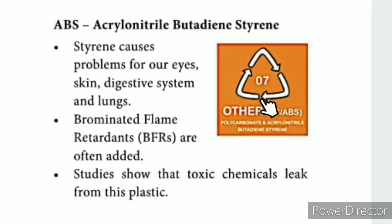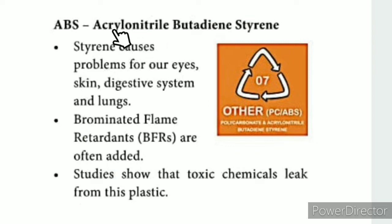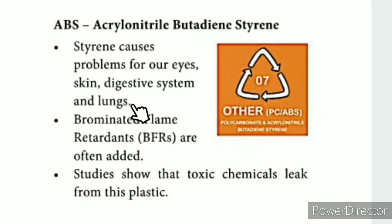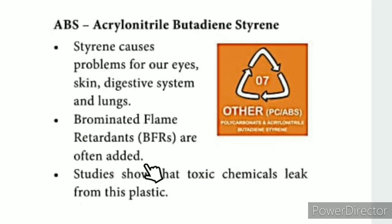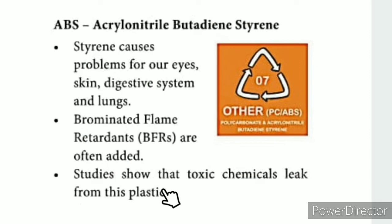Resin code 7 also includes ABS — Acrylonitrile Butadiene Styrene. Styrene in ABS causes problems for our eyes, skin, digestive system, and lungs. Brominated flame retardants are often added to this plastic, and studies show that toxic chemicals leak from it.